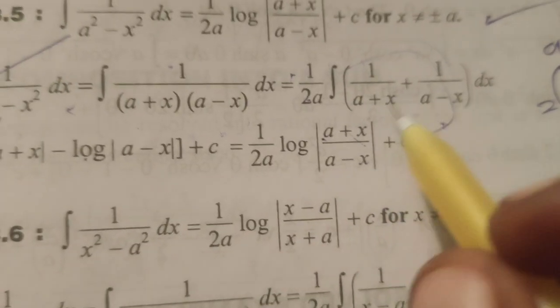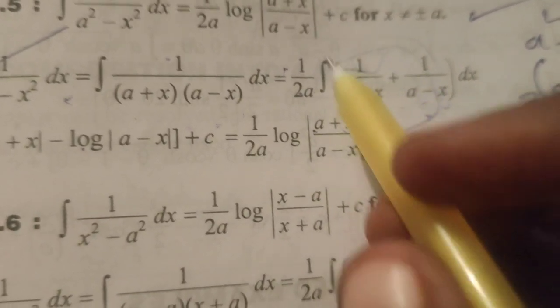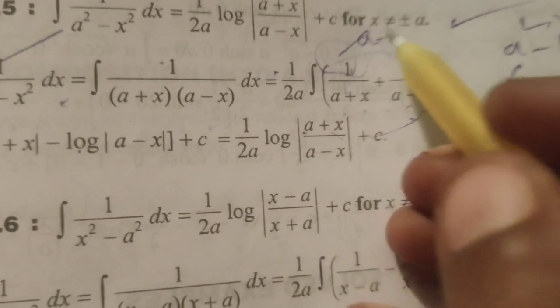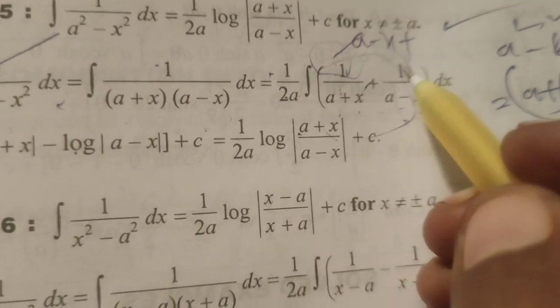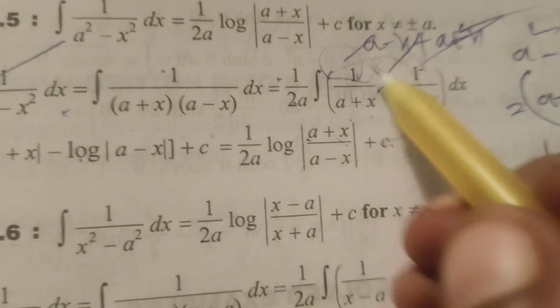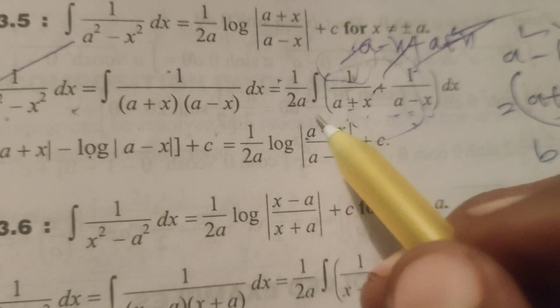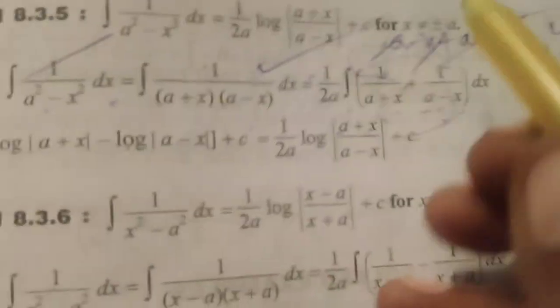Now suppose here we are going to take LCM a plus x into a minus x. Here in place of will get a minus x. Here plus in place of 1, a plus x. So minus x plus x gets cancelled, will get 2a by a plus x into a minus x. 2a, 2a gets cancelled, will get the same result.